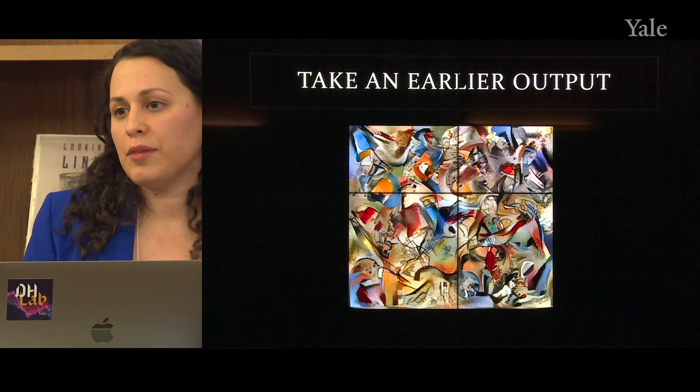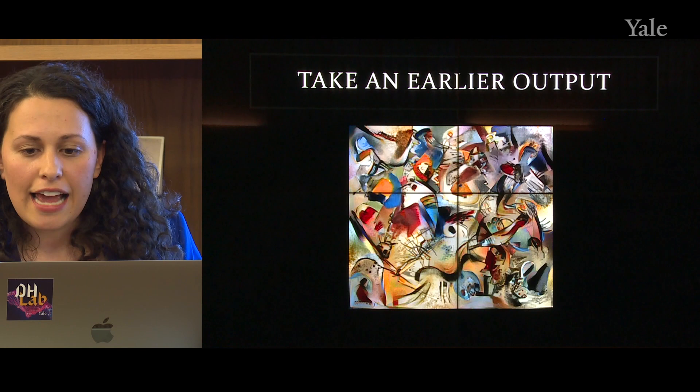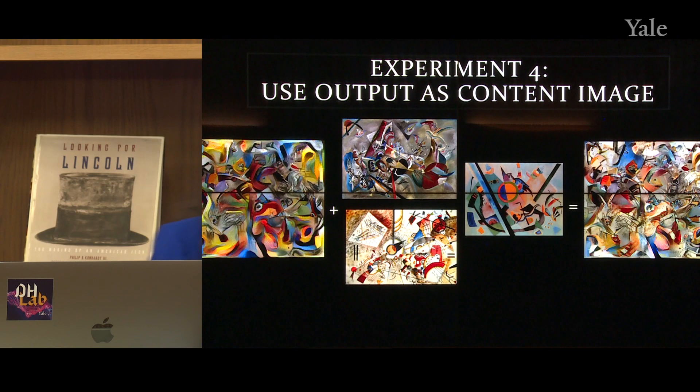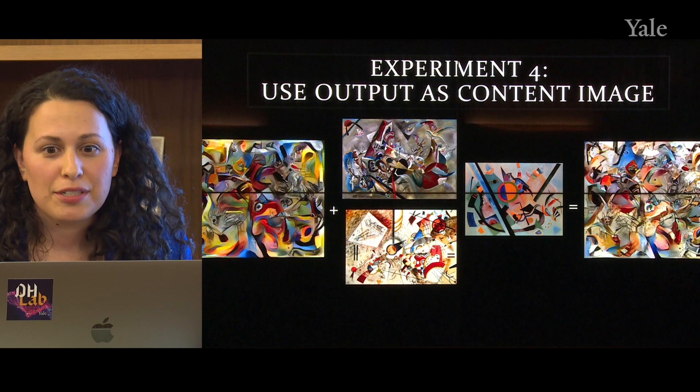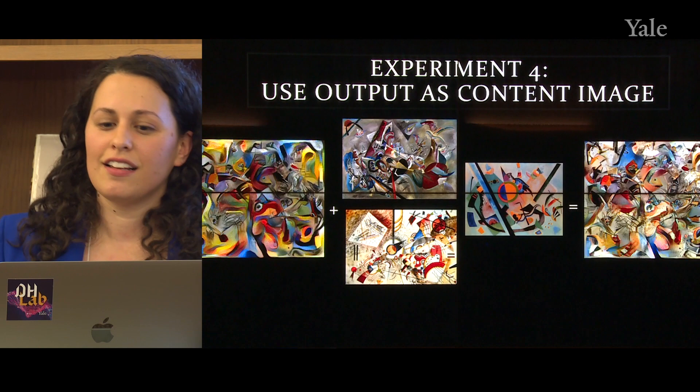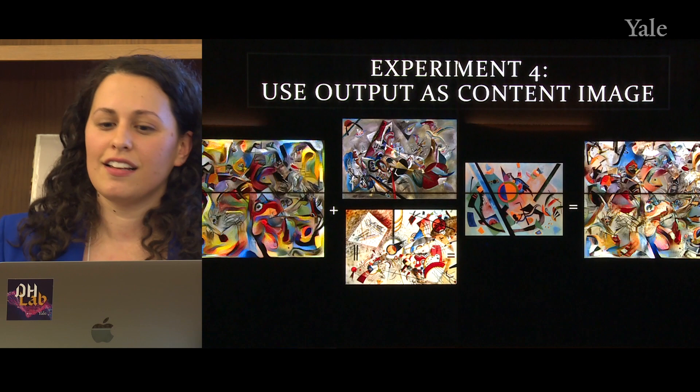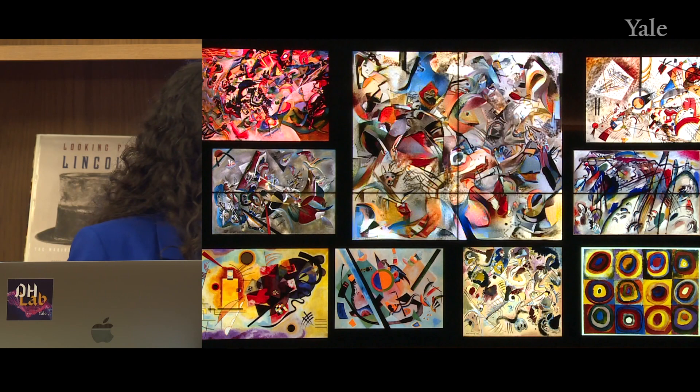The last thing I'll show is you could take the output and use that as your new content image. So now we have an output which is already kind of a mixed-up one with a lot going on, and then we're adding three more style images to that. The result feels that much more transformative, because we suddenly don't have a content image that already had a firm content attached to it. You can see that it really does start to have the feel of Kandinsky without having the exact content copied from any single one of those paintings.